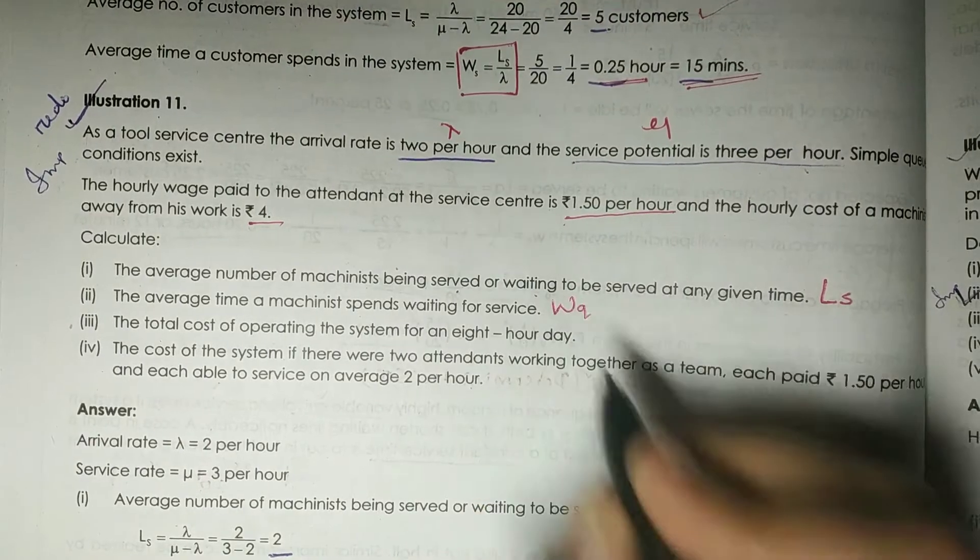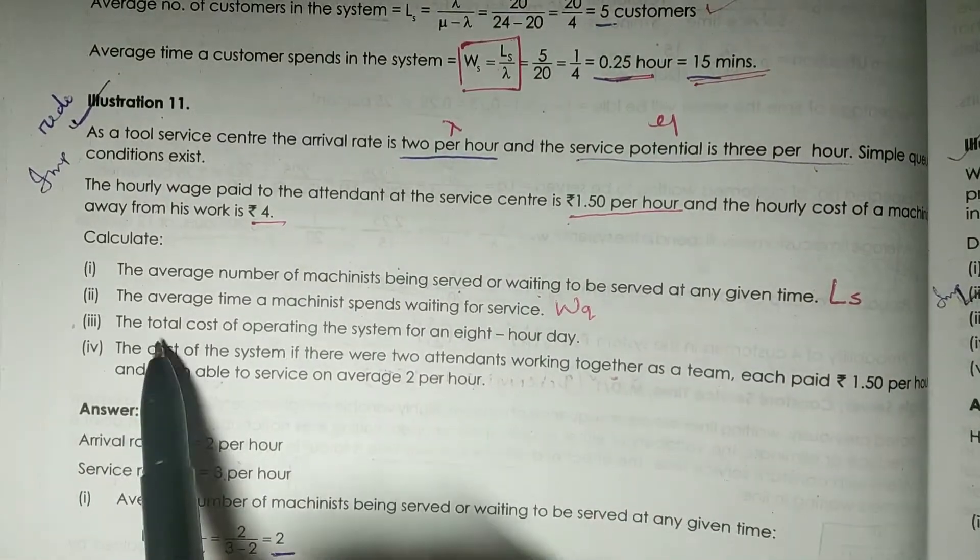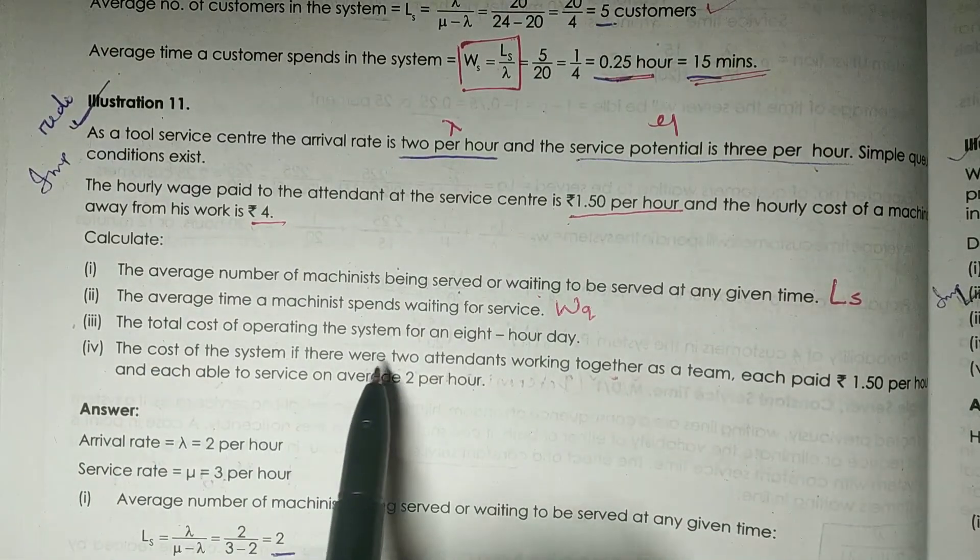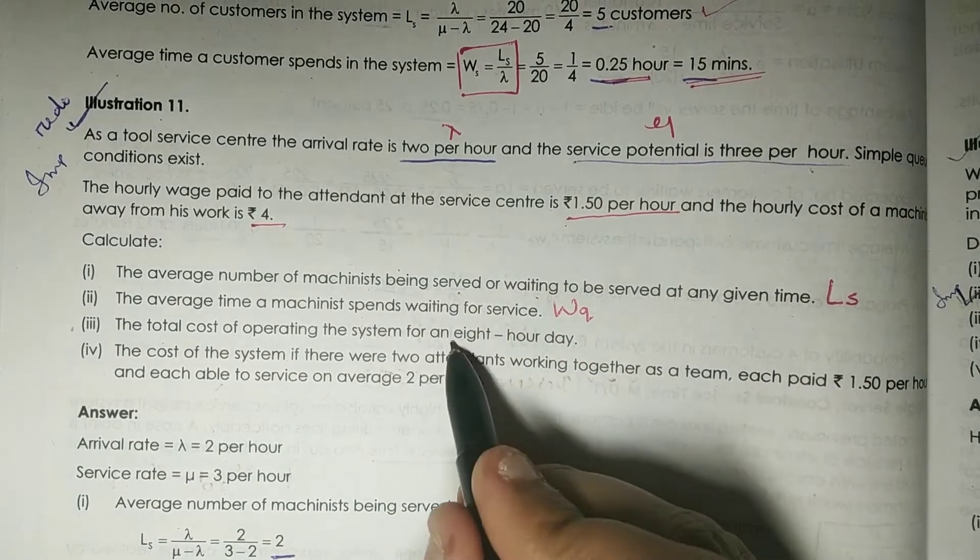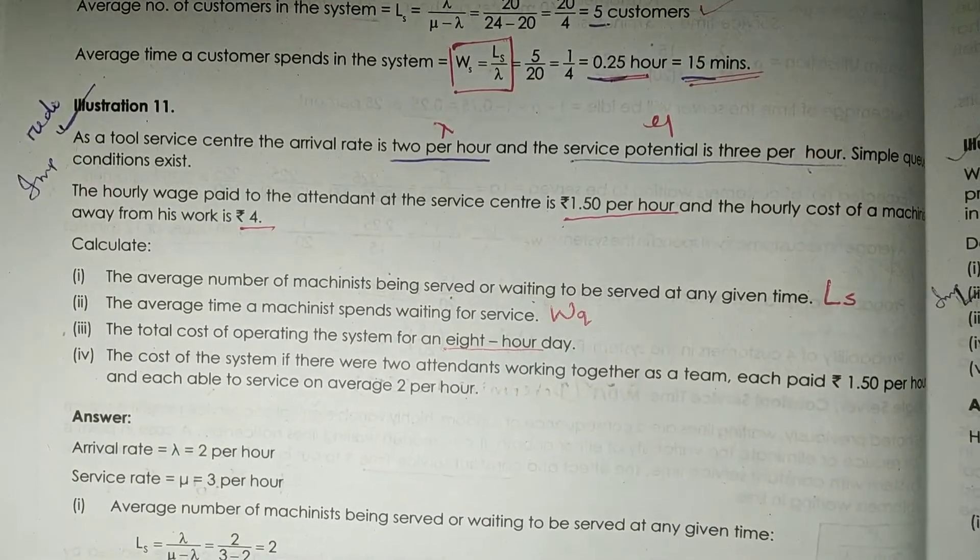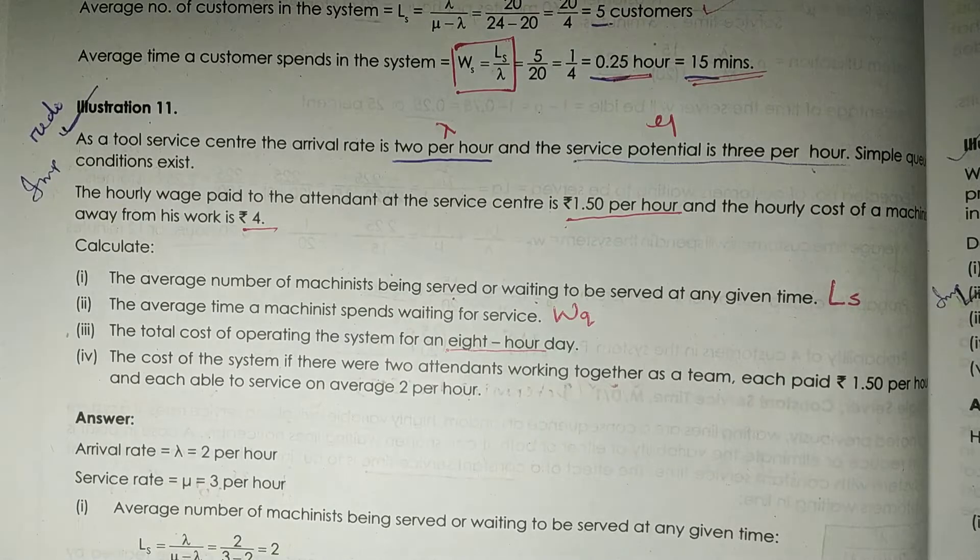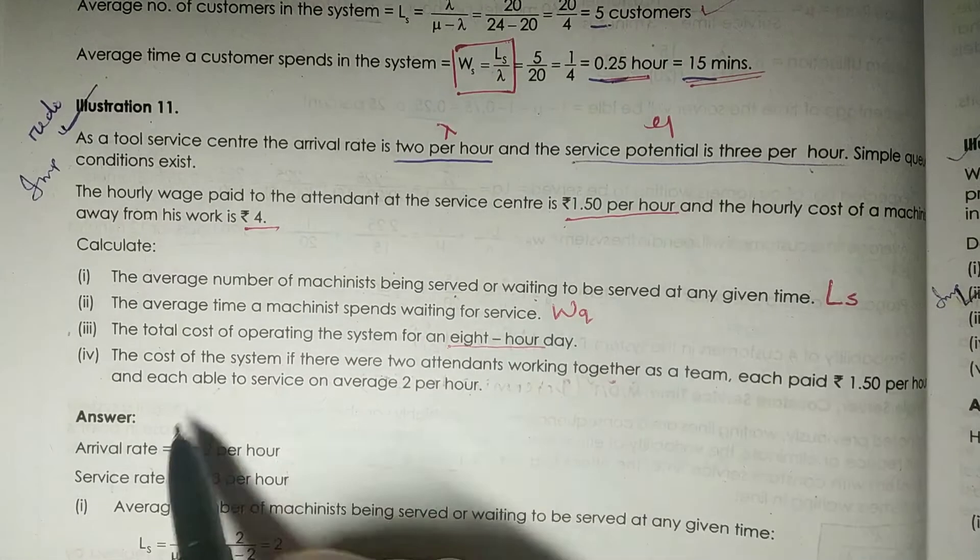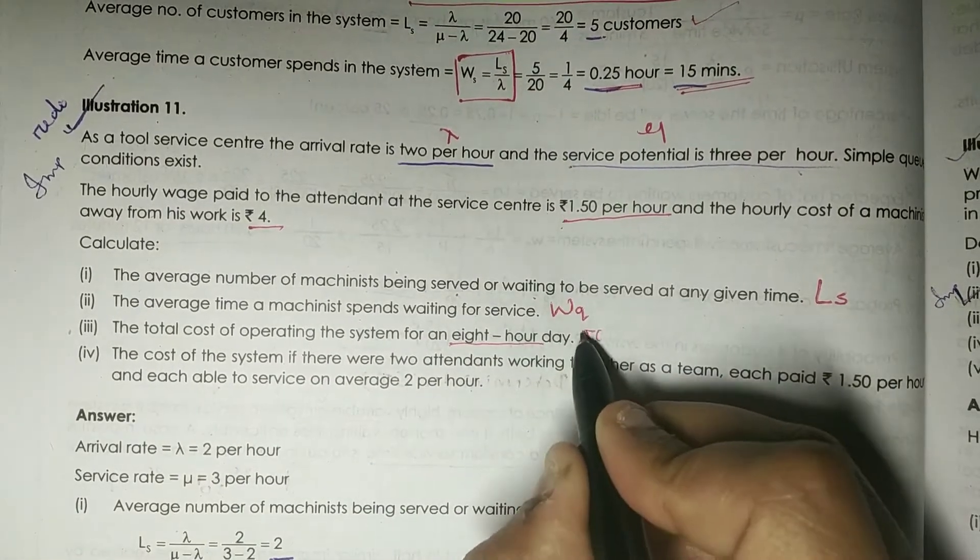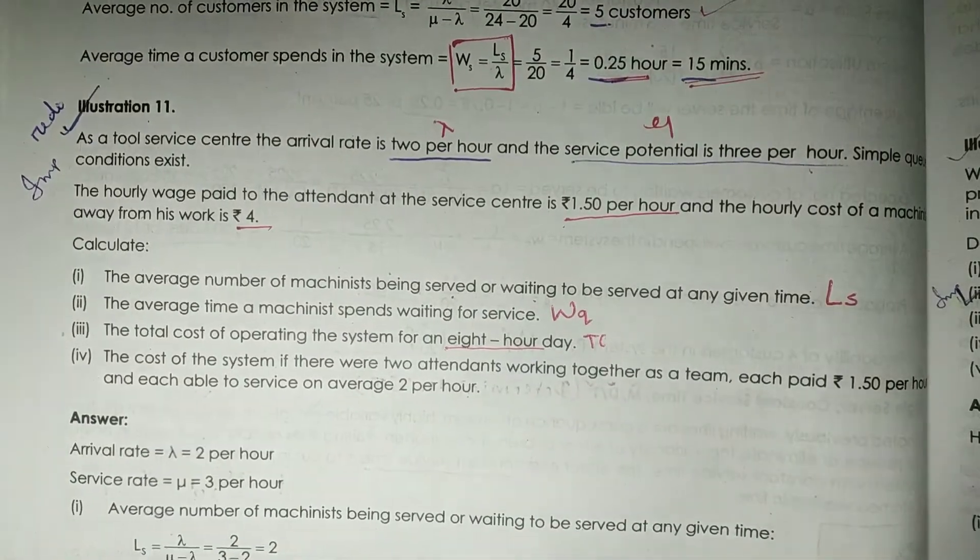Then the average time a machinist spends waiting for service, so this is your Wq. Then the total cost of operating the system for an 8-hour day.